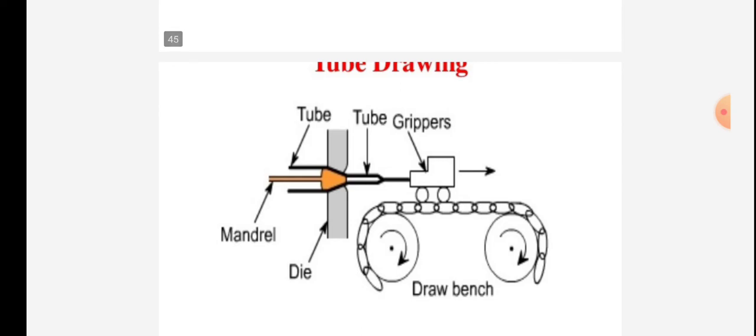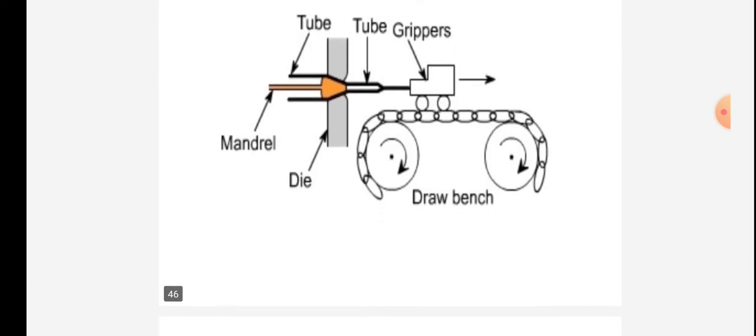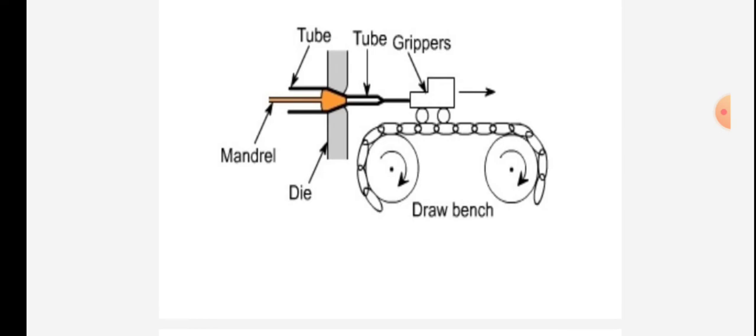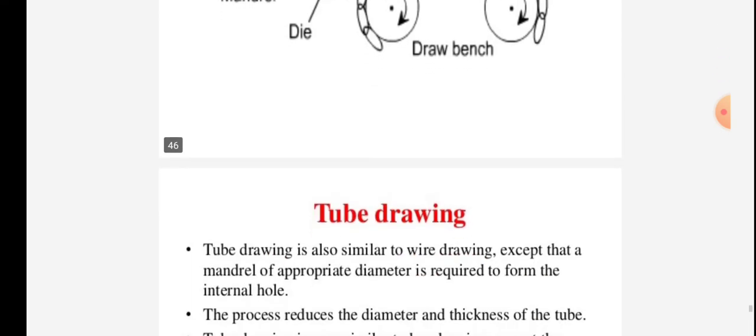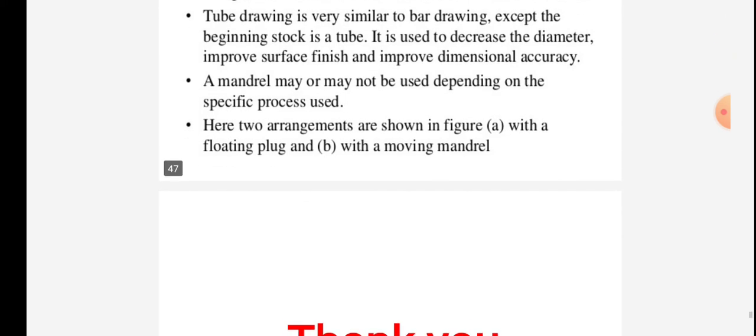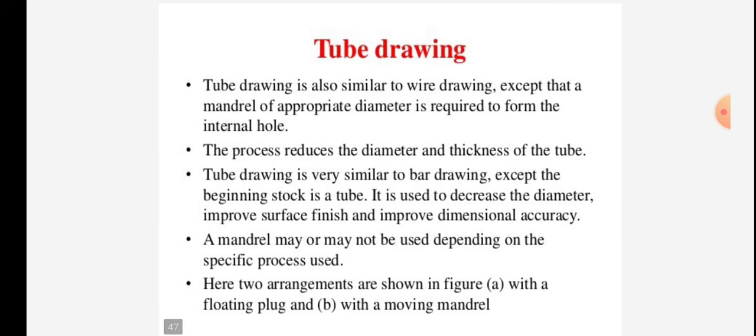Tube drawing: tube is given, mandrel is given, die is given, tube grippers are given, and draw bench is given. Tube drawing is similar to wire drawing, except that a mandrel of appropriate diameter is required to form the internal hole. The process reduces the diameter and thickness of the tube. Tube drawing is very similar to bar drawing, except the beginning stock is a tube.